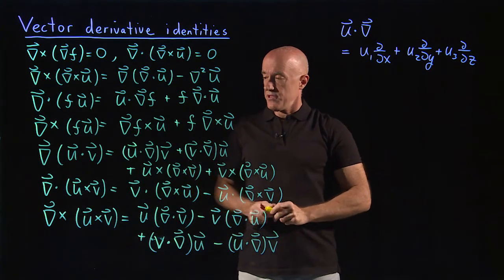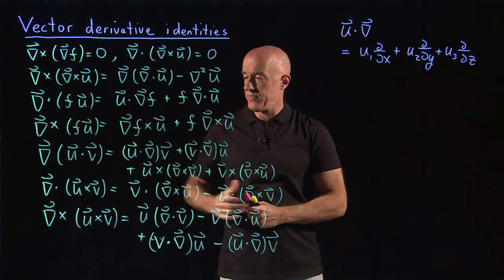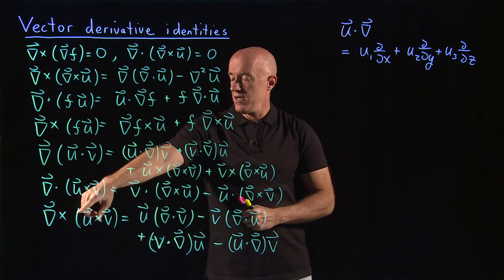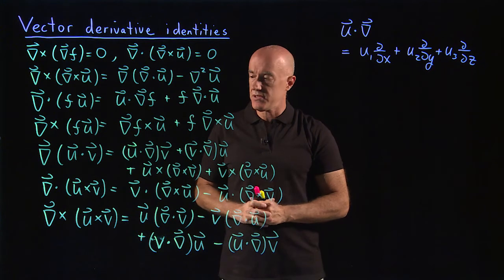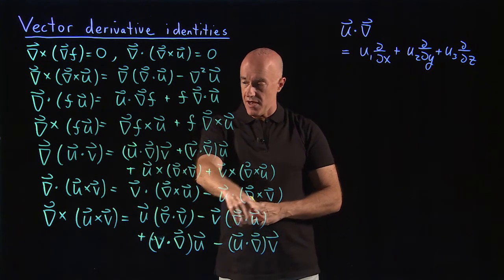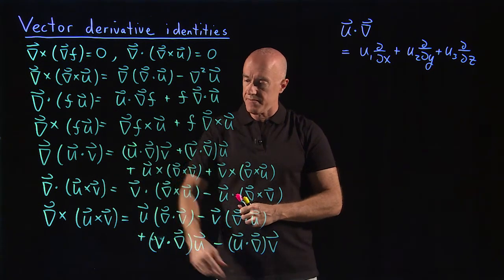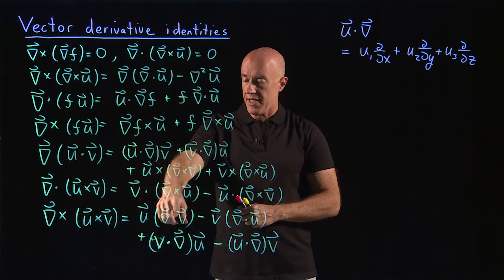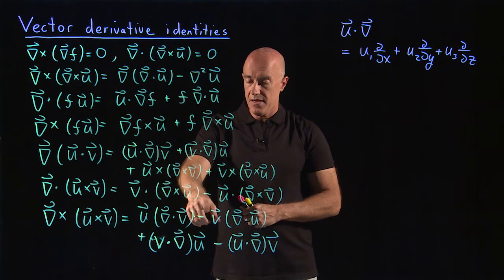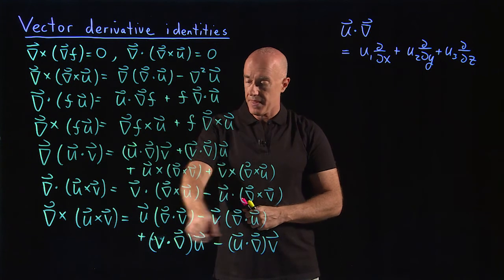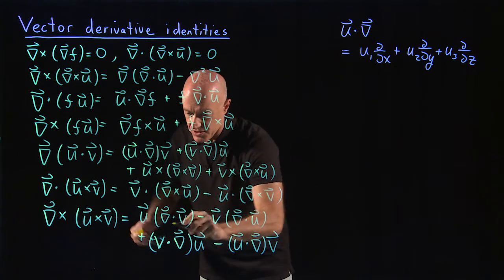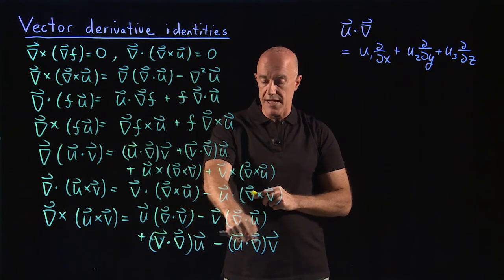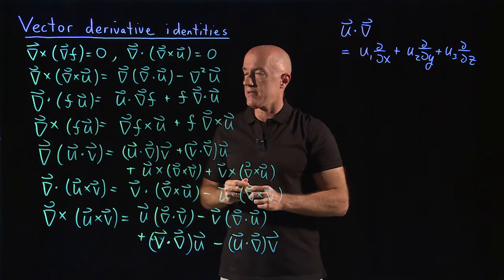The seventh identity is del cross u cross v — the curl of a cross product between two vectors, which is a vector. This has four terms in the expansion: u times del dot v, minus v times del dot u, plus v times u dot del, minus u dot del v, where we use the u dot del operator.